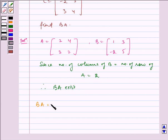Now, BA is equal to matrix 1, 3, minus 2, 5 multiplied by matrix 2, 4, 3, 2.